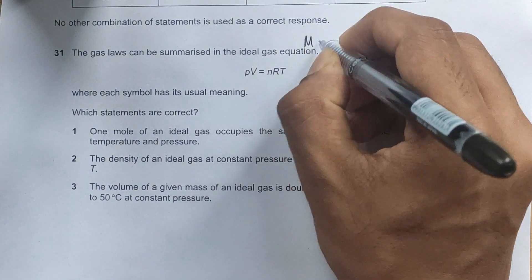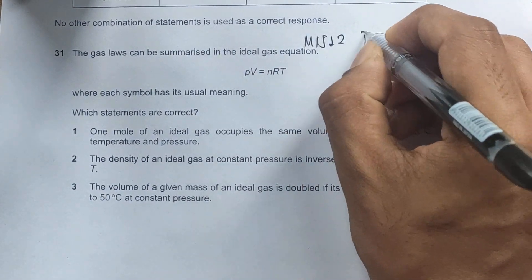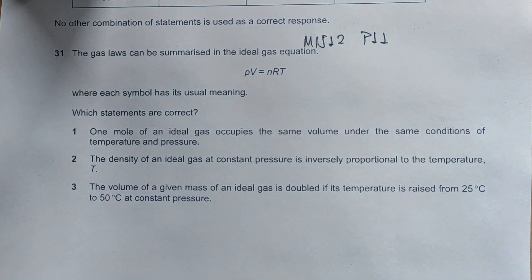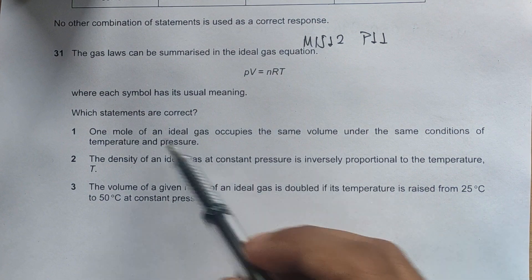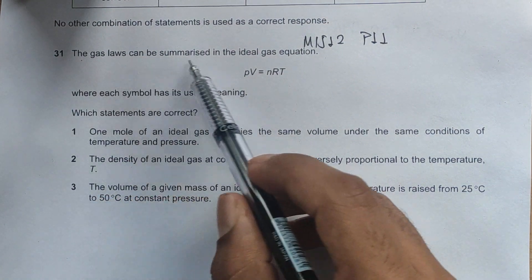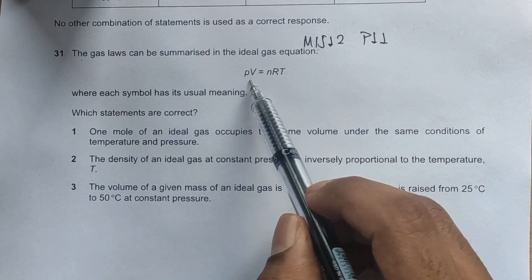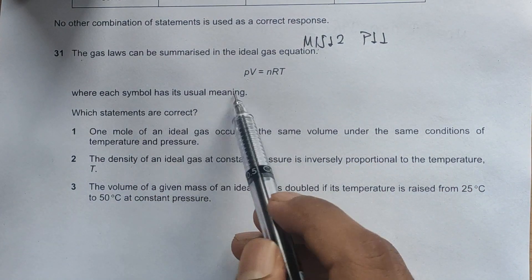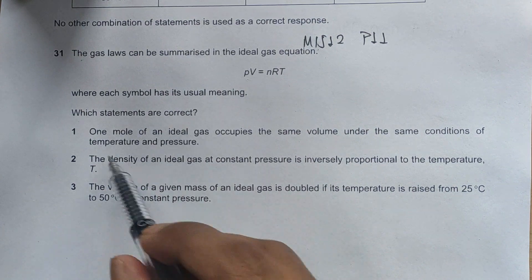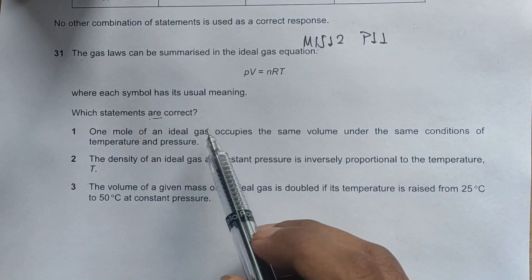Hello everyone, this is a June tutorial, question paper 11, question number 31. It's related to the chapter on ideal gases. The question asks which gas laws can be summarized in the ideal gas equation. We have the classical ideal gas equation PV equals nRT, where each symbol has its usual meaning. Which statements are correct? This means we should have multiple correct answers.